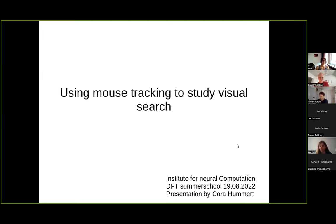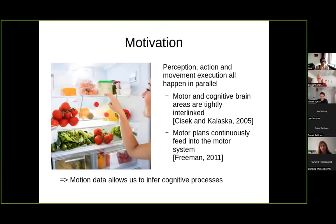Welcome to my talk about using mouse tracking to study visual search. Since you already heard a lot about visual search, I'm not going to talk a lot about that. Instead, today we are going to look at the movement side of visual search. It's intuitively obvious why you would want to look at that, because normally in real life you do not only want to find a target but you also want to reach to a target, and often that's actually happening at the same time — you're looking for a target and you are already reaching for it.